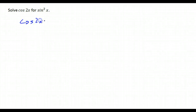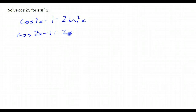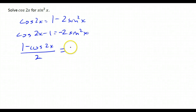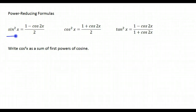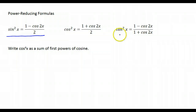If we take our cosine 2x formula and solve it for sine squared x: cosine 2x equals 1 minus 2 sine squared x, so sine squared x equals 1 minus cosine 2x all over 2. This is called a power reducing formula because it takes us from a squared sine to a cosine that's not being squared. Similarly, cosine squared x equals 1 plus cosine 2x all over 2. And tangent squared x equals 1 minus cosine 2x over 1 plus cosine 2x.